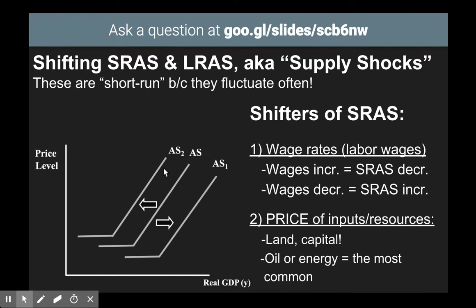The same thing works on the opposite side. If wages decrease, you can produce more goods and services, which would shift short run aggregate supply to the right. Because if you're paying your workers less, you can buy more natural resources and put more money into the production of goods and services.